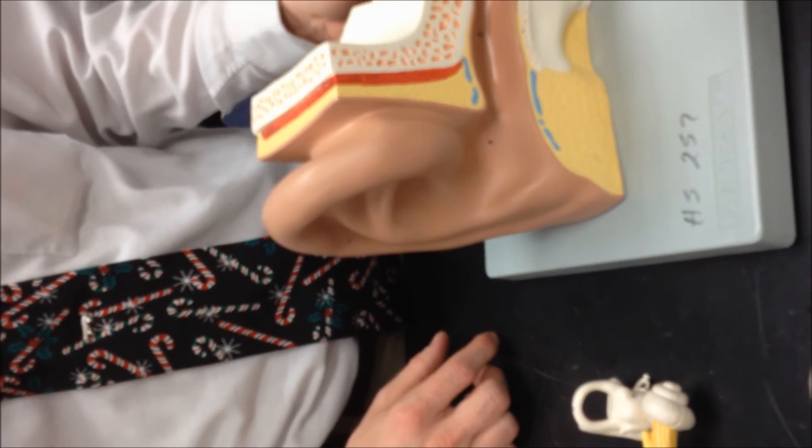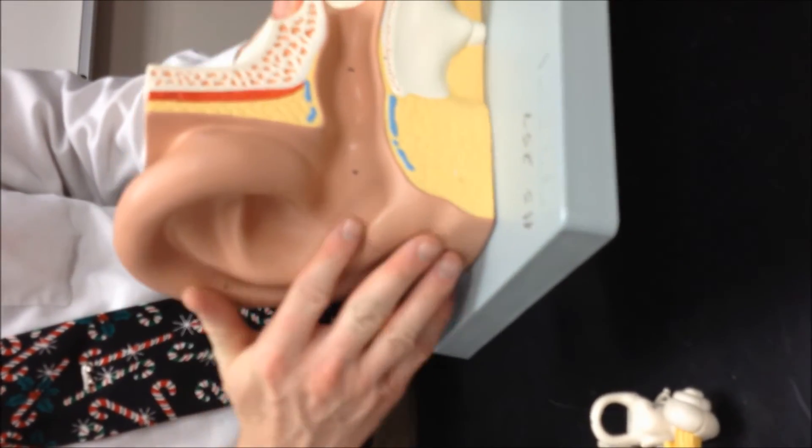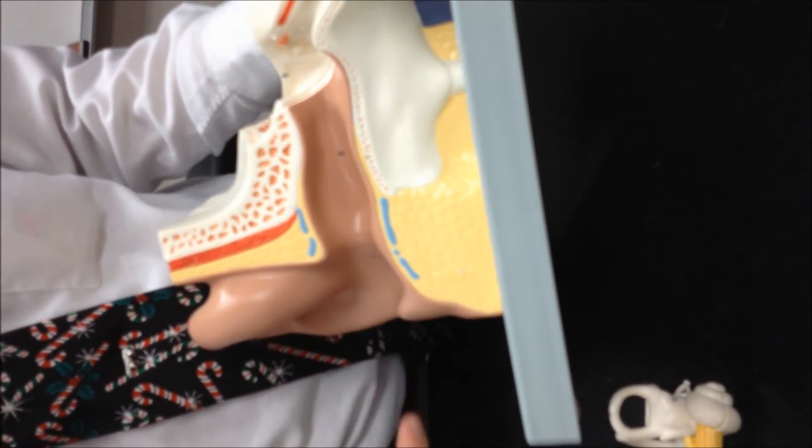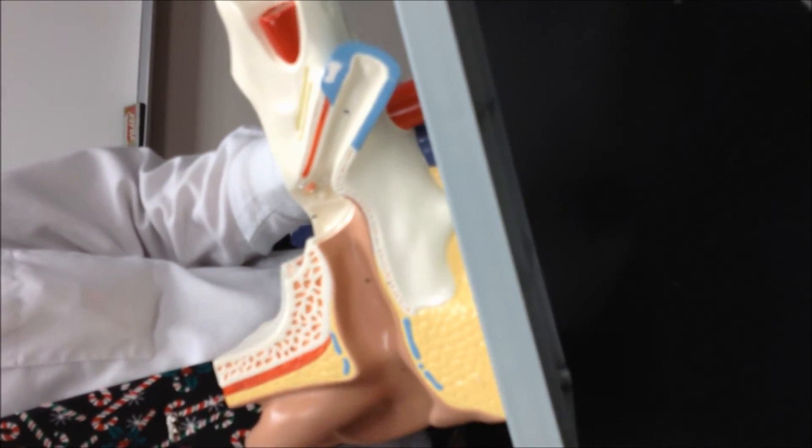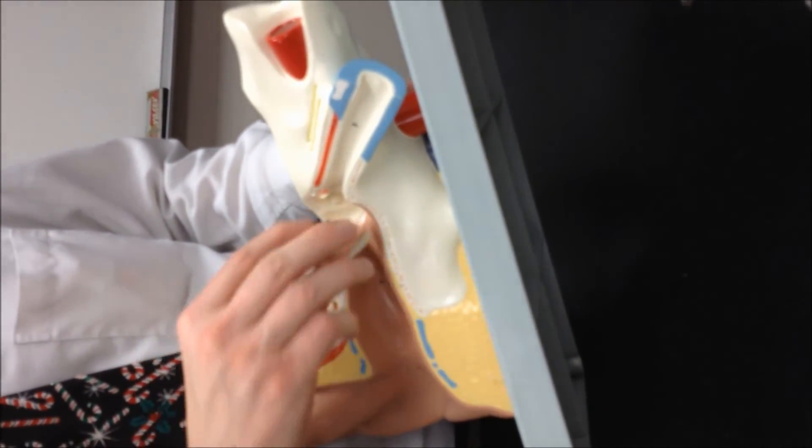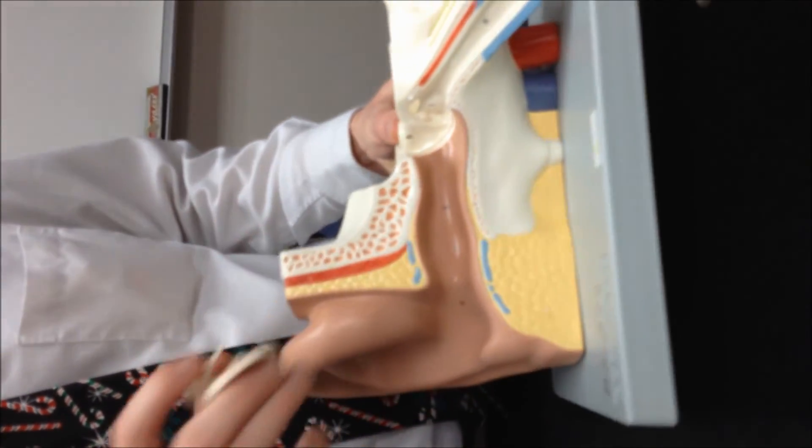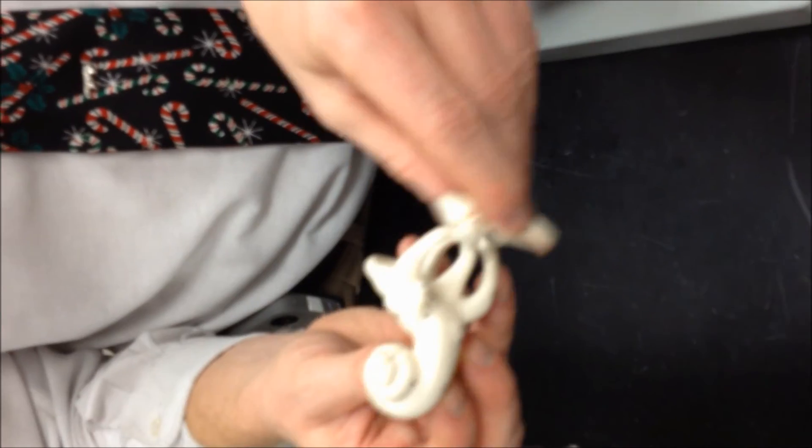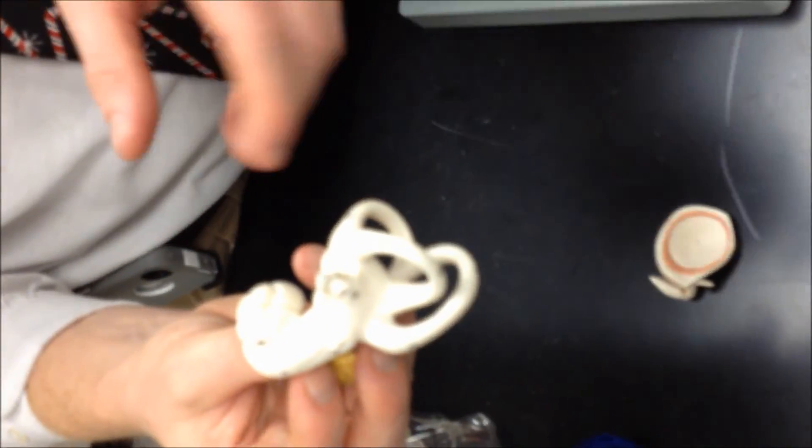All right. So the auricle or pinna, you're the external auditory meatus or external acoustic meatus. Both are correct. Then the auditory tube. And what would sit right up in here is the tympanic membrane. That's the tympanic membrane. On the back is connected to the malleus. The malleus is connected to the incus. And then that attaches to the stapes, a little stirrup-shaped bone that sits on the oval window.